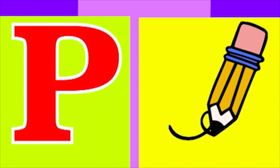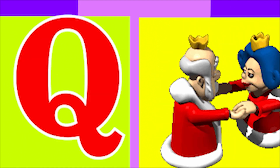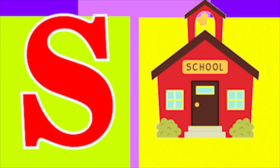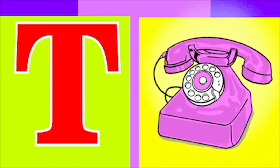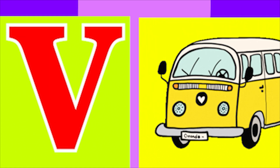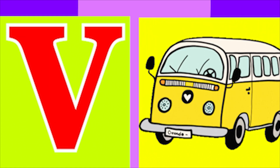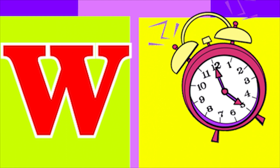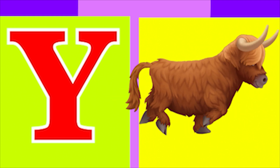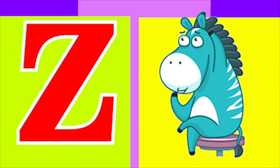U for Queen, R for Rose, S for School, T for Telephone, U for Umbrella, V for Fan, W for Watch, X for Xylophone, Y for Young, Z for Zebra.